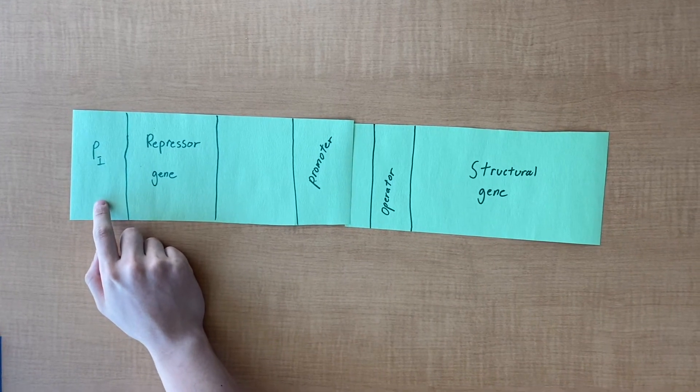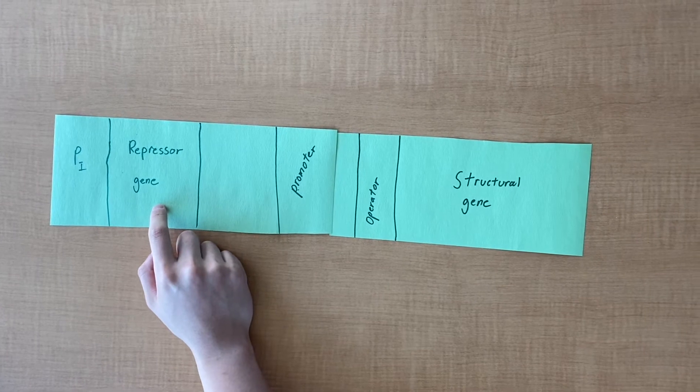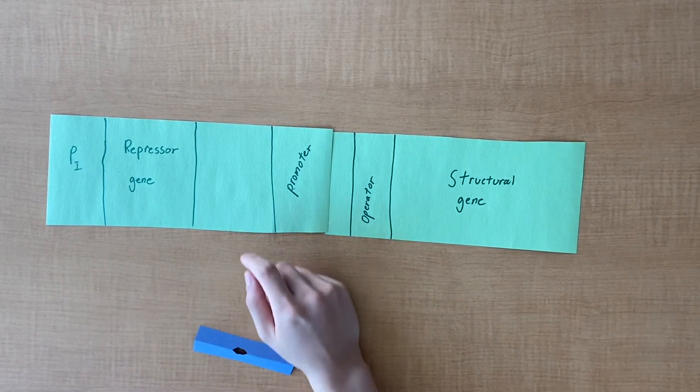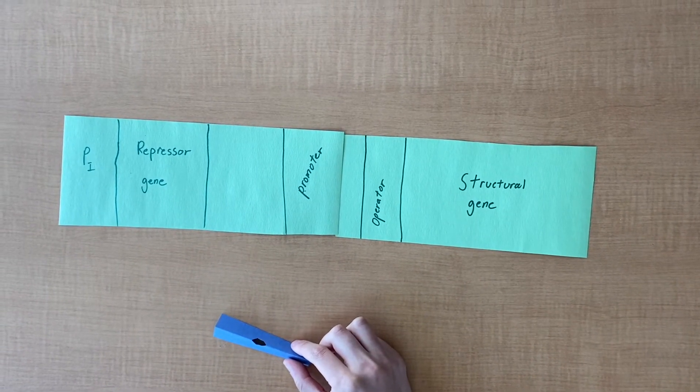This is a promoter that will start the transcription of the repressor gene. This is the repressor gene that through transcription and translation will produce this repressor protein. Repressor protein turns off transcription when bound to the operator region.